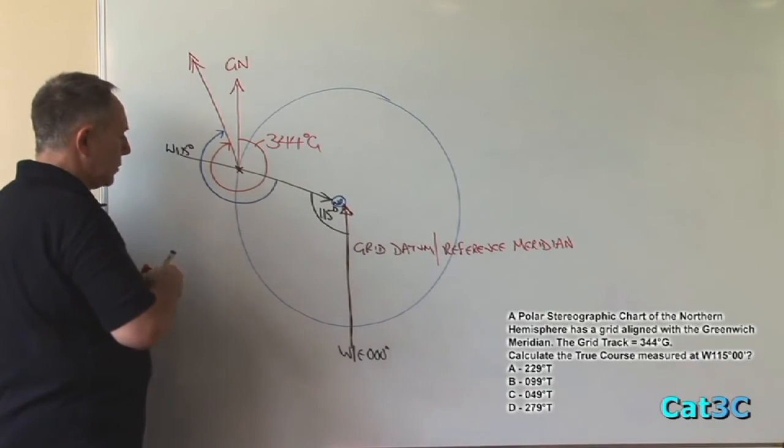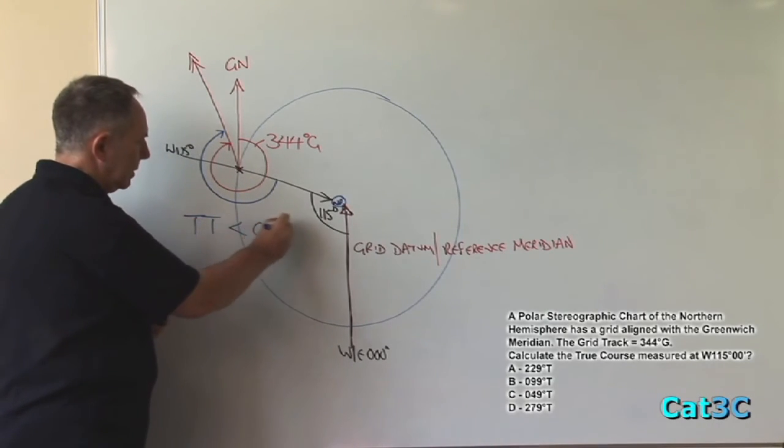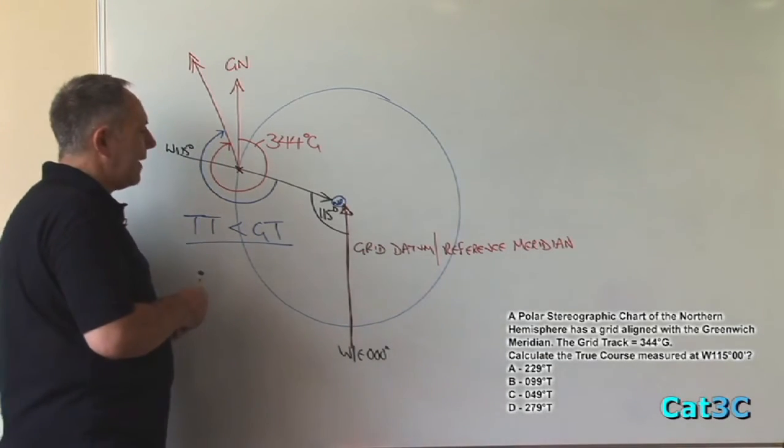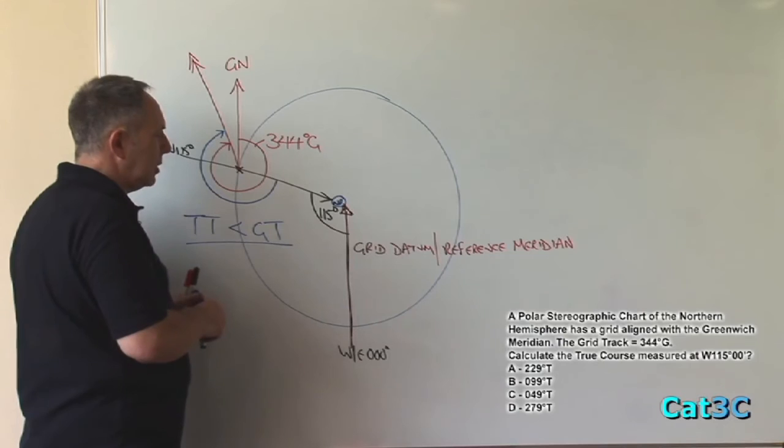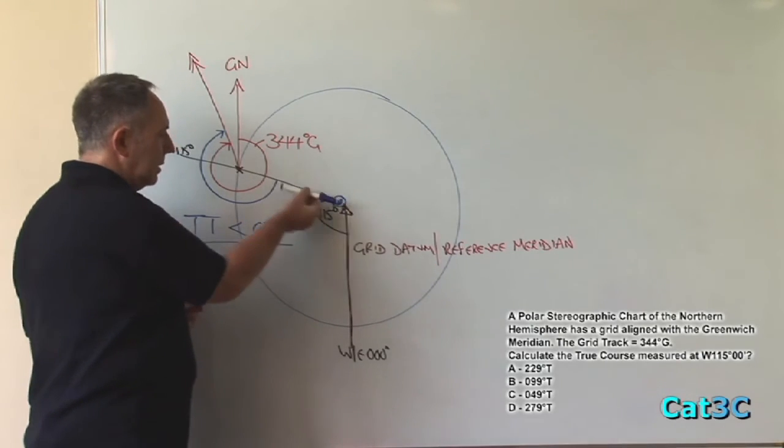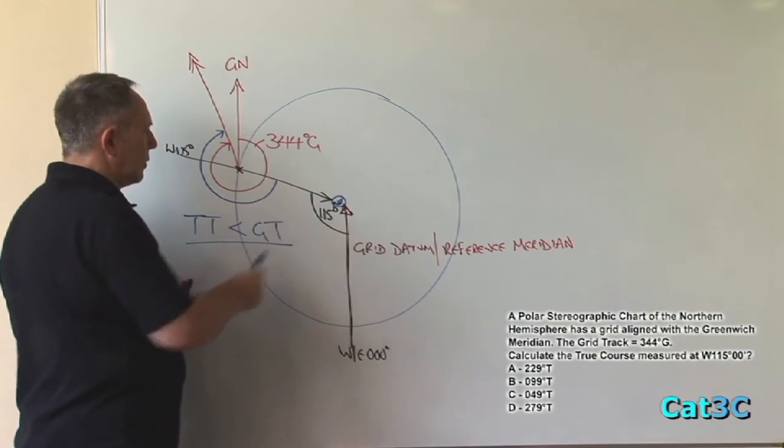So the true track is less than the grid track. By what? Well the value is equal to the change in longitude between the grid datum meridian and the local meridian, which is 115 degrees.